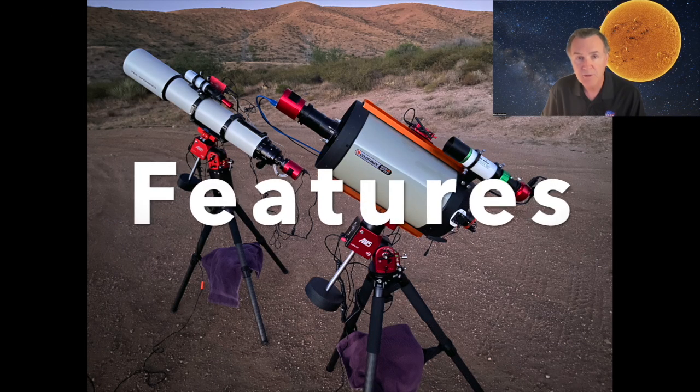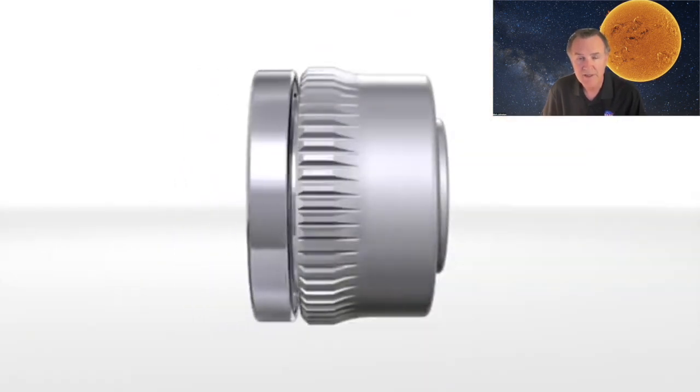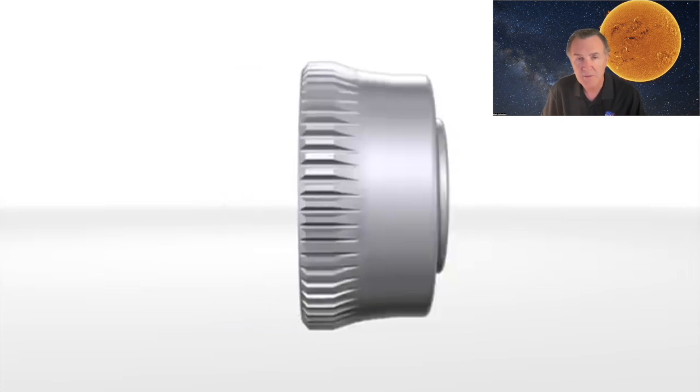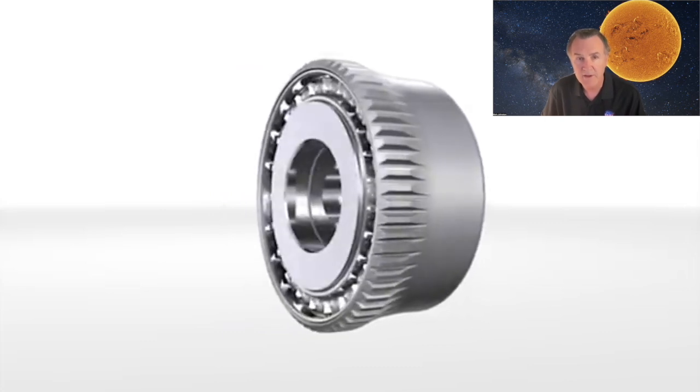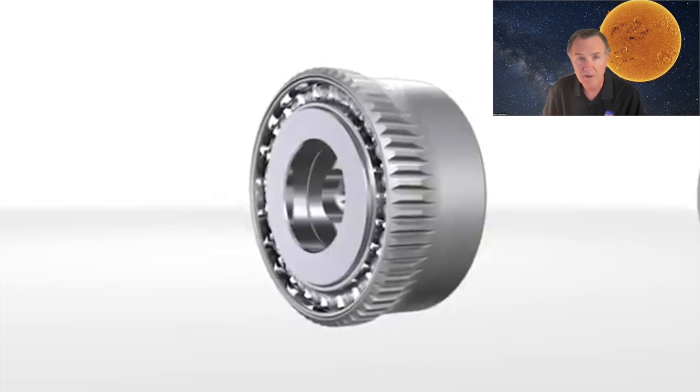The AM5 supports both equatorial and alt-az configurations. It has a harmonic drive. This design allows the mount to be small and lightweight for the load it can carry, with a higher periodic error than a traditional worm gear mount.